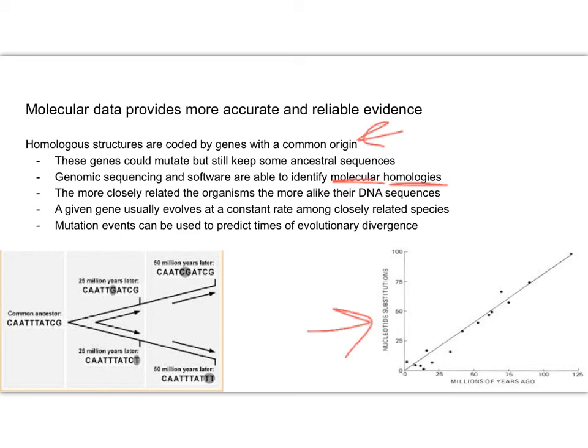These mutation events can be used to predict the times at which the divergence would have happened. Remember we said phylogenetic trees try to take into consideration time. You can see in this diagram on the left here—25 million years later, 50 million years later—you can see the time frames that these changes were happening.